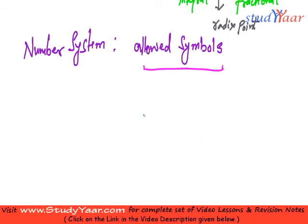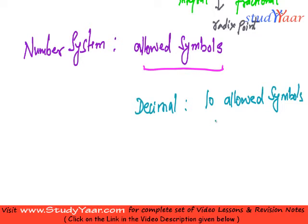For example, in our day-to-day life, we use decimal number system. And decimal number system has 10 allowed symbols. What are these 10 allowed symbols? These are 0 to 9.